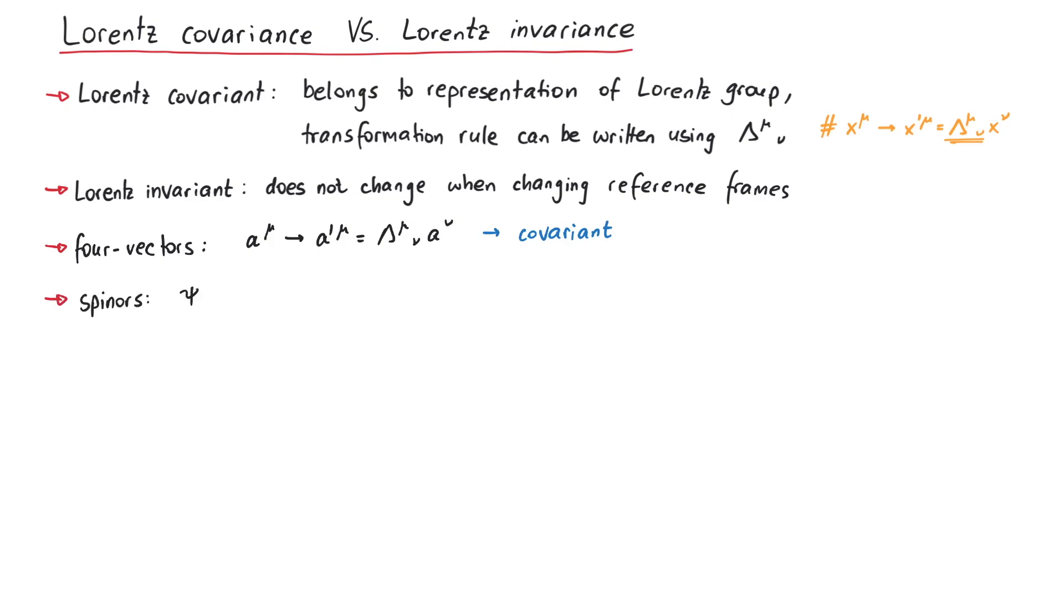Spinors are also Lorentz covariant, although their transformation behavior is a bit more complicated. Another example could be a scalar quantity like temperature. The temperature of some place is the same, whether we are measuring it while standing next to it, or while passing by next to it with a constant velocity. Therefore it is a Lorentz invariant quantity.